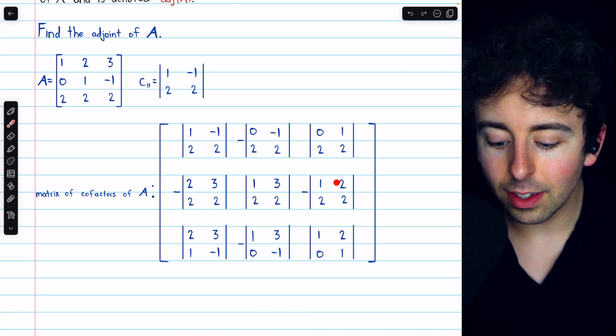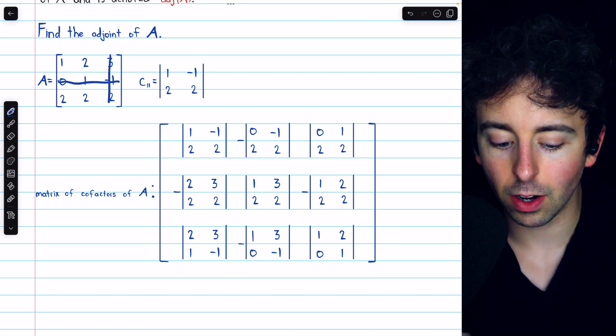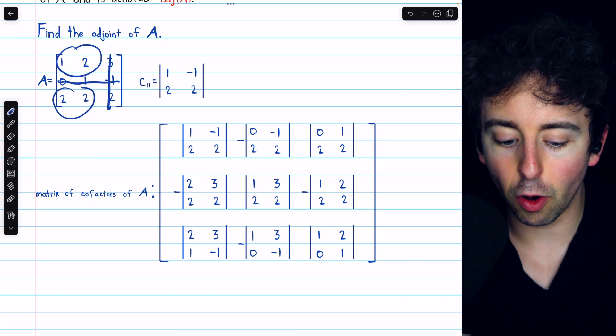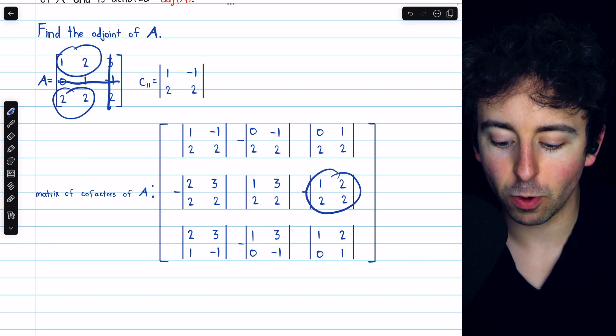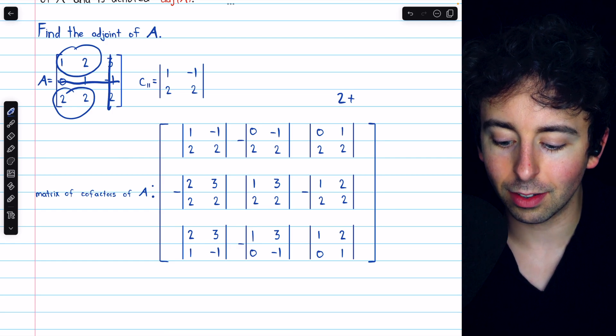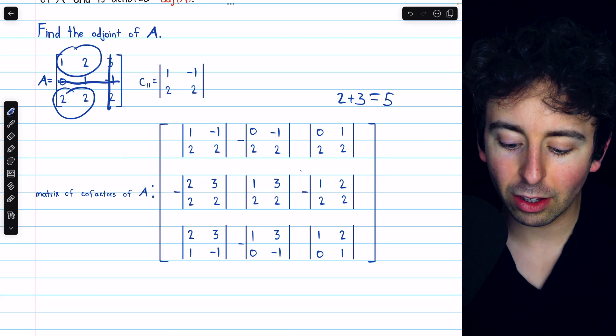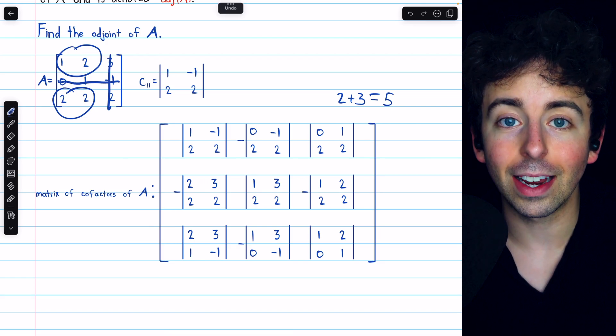Just for one more example, this is the cofactor of row 2, column 3. So we would eliminate row 2 and column 3 and take the determinant of that submatrix, and then we would also note that row 2 plus column 3, that's 2 plus 3, that's 5. That's odd, and so that's why there is a negative in front of that determinant.